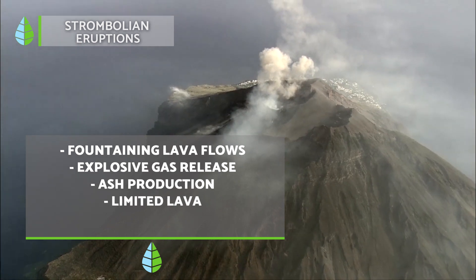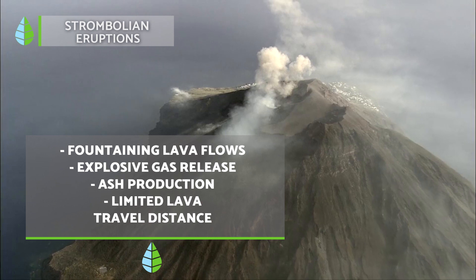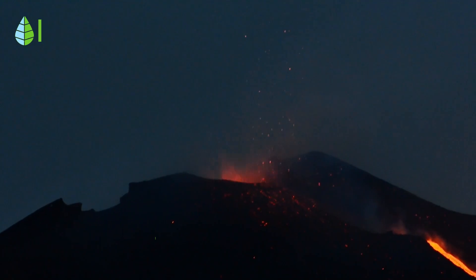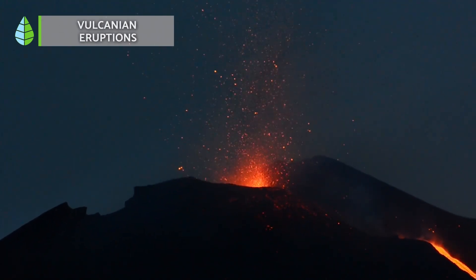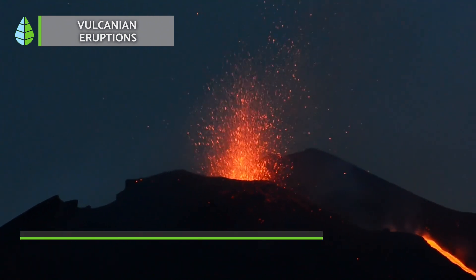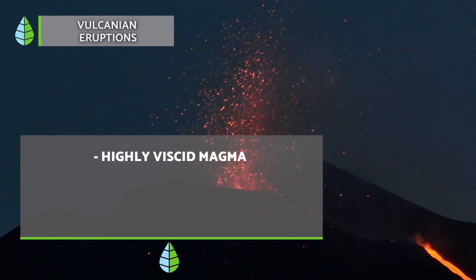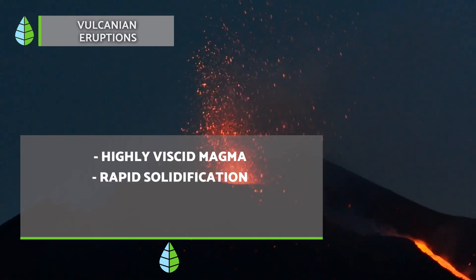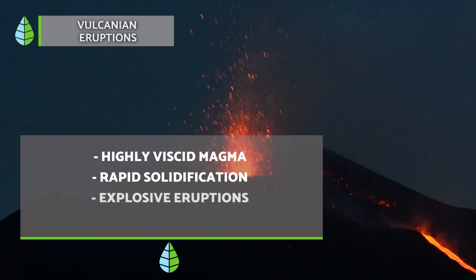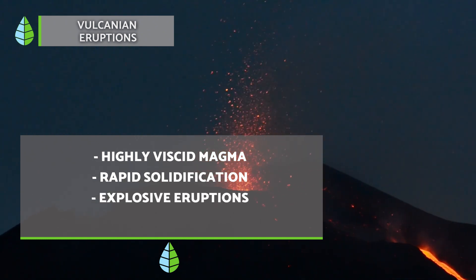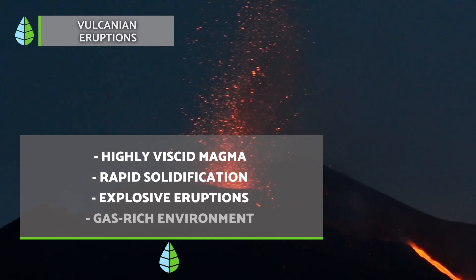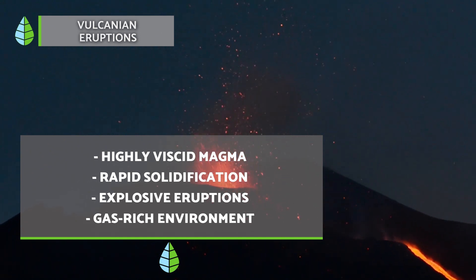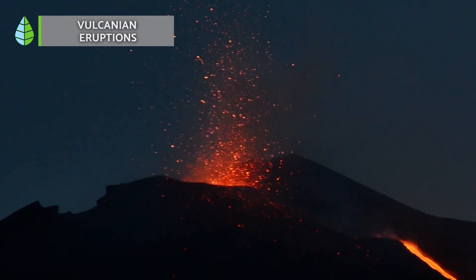However, unlike Hawaiian eruptions, the lava from Strombolian eruptions tends to cool down sooner and does not travel as far. Volcanian eruptions, named after Italy's Mount Vulcano, exhibit distinct characteristics compared to their fluid lava counterparts. The lava is not fluid and hardens quickly. The eruption occurs with fast and very strong explosions, with a lot of gases and ash. They are some of the most spectacular eruptions and can last several days or even months.